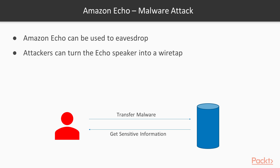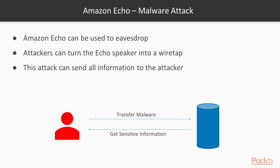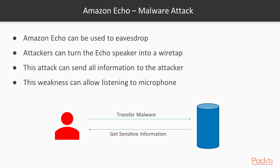An attacker can turn the Echo speaker into a wiretap to listen to conversations. This attack can send all captured information to the attacker, and the weakness can also be used to listen via the microphone. The attacker simply sends malware to the Amazon Echo, installs it, and that malware provides information directly to the attacker. So a malware attack is possible on Amazon Echo.